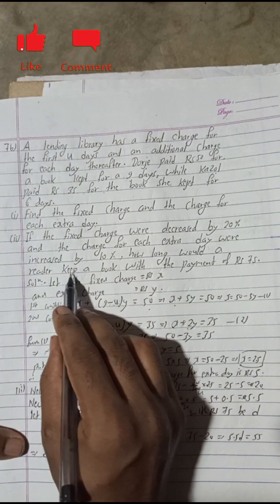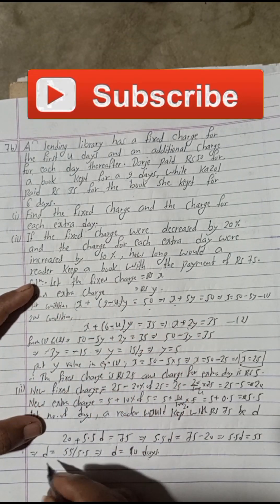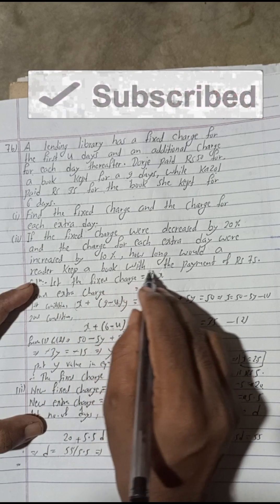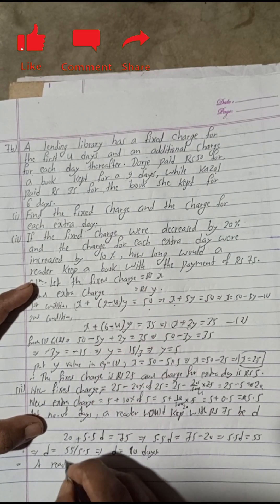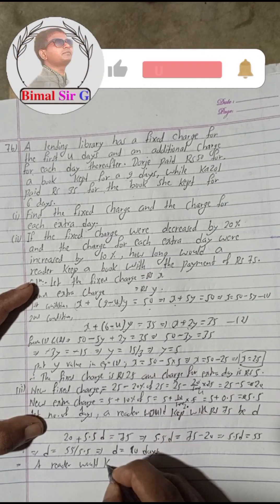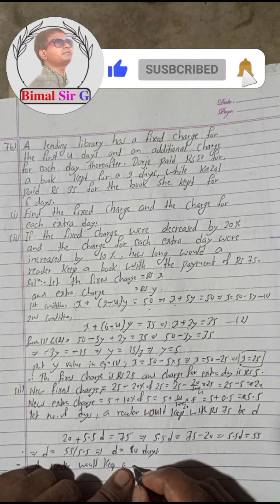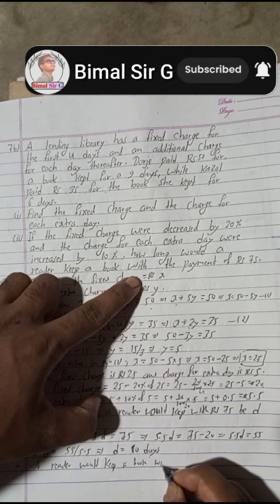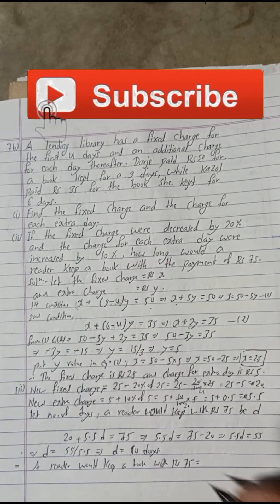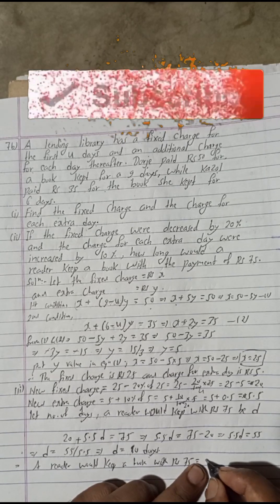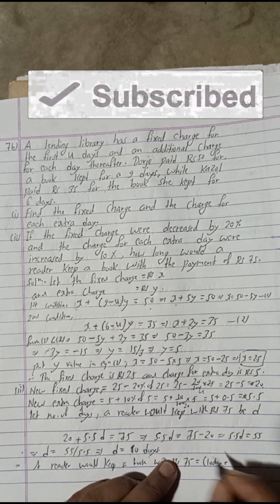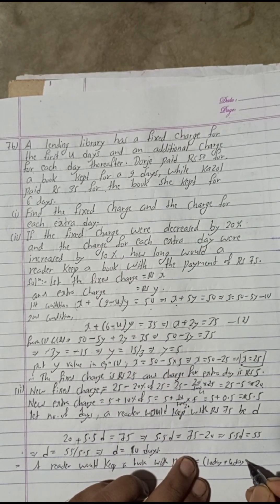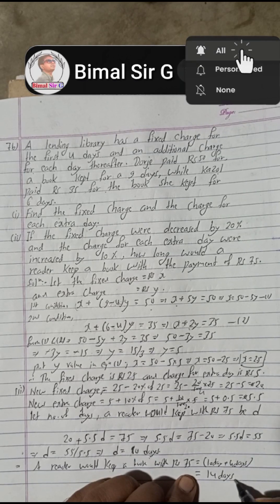But these 10 days are the extra days beyond the first 4 days. So the total number of days a reader would keep the book with a payment of Rs75 is 10 + 4 = 14 days. This is our required solution for question 7b.